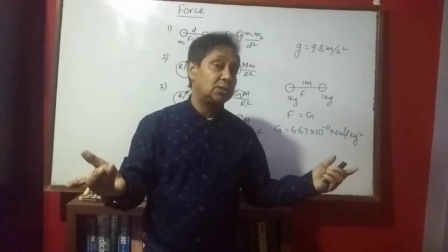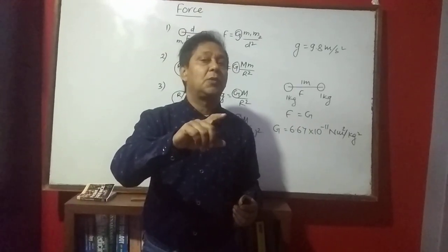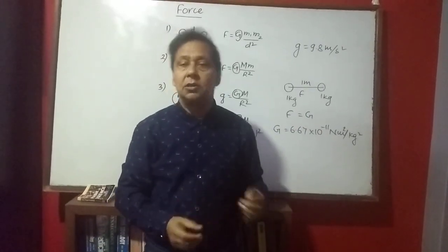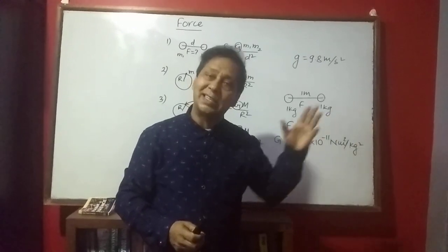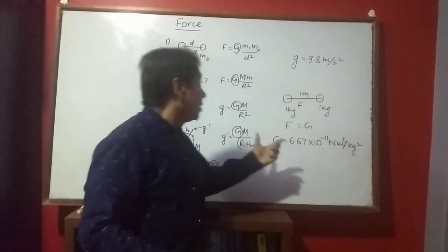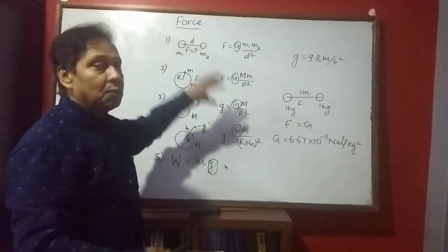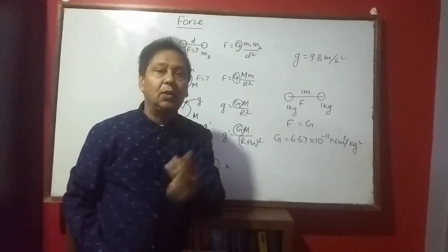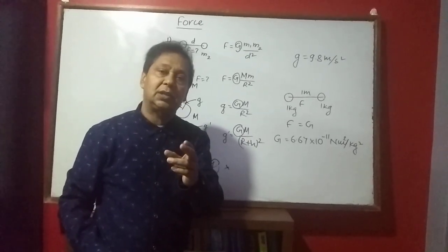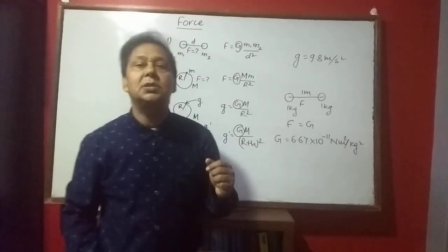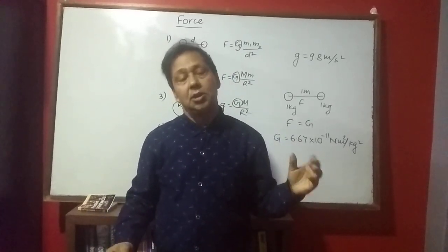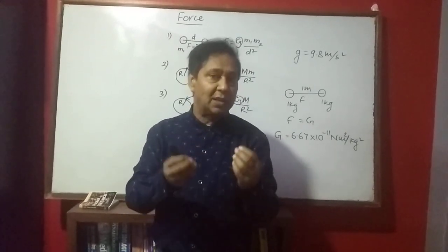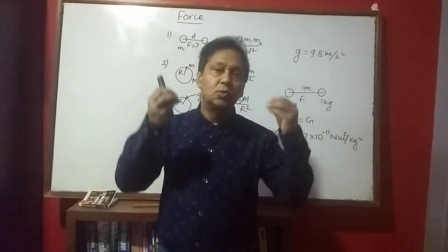The value of G is 6.67 × 10⁻¹¹ and its unit is Newton·meter² per kilogram² (N·m²/kg²). Remember this — it is very important. We must remember two values: small g = 9.8 m/s², and capital G = 6.67 × 10⁻¹¹ N·m²/kg². These values may or may not be given in the numerical problem, so you must remember them yourself.